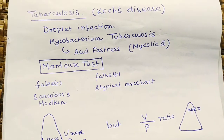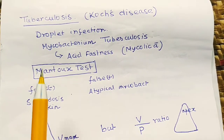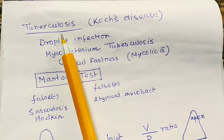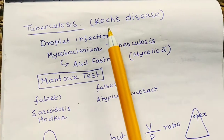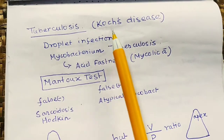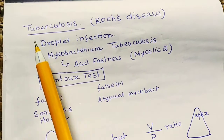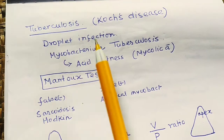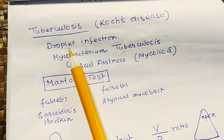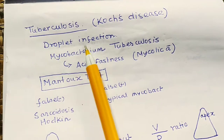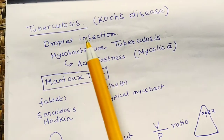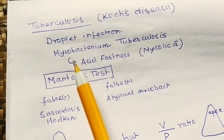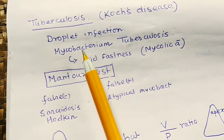Hello everyone, I am Shahan Laik and today we will discuss tuberculosis. Tuberculosis is also known as Koch's disease, named after the scientist Koch. It is spread by droplet infection.